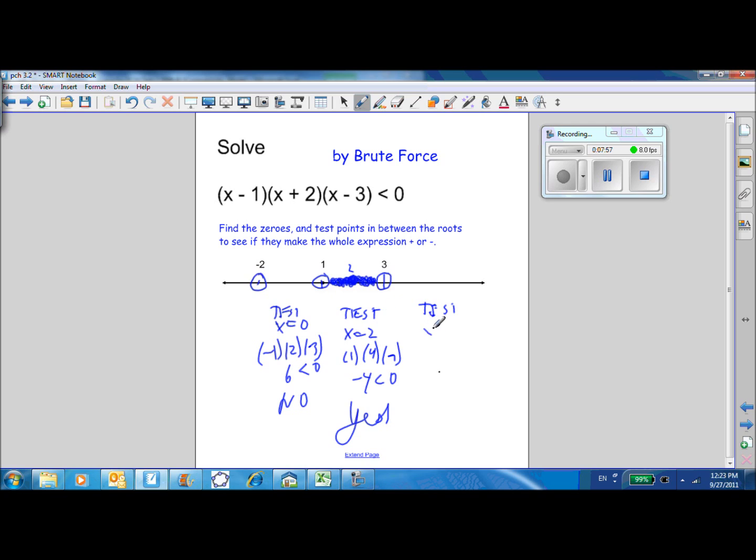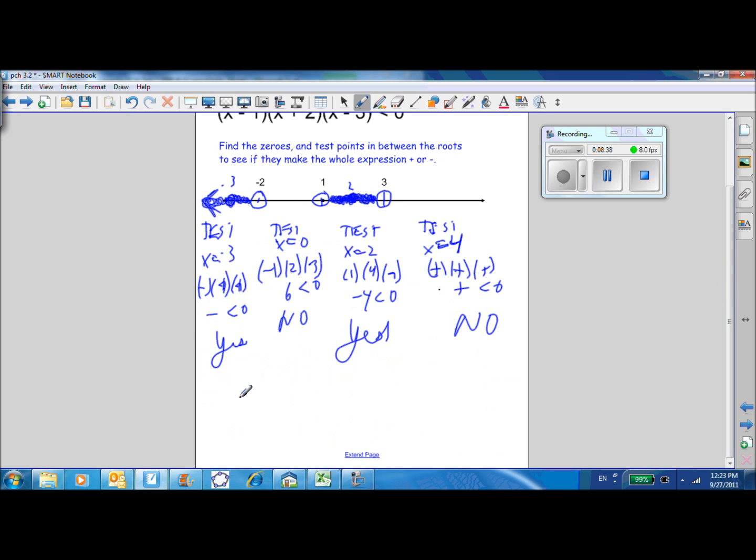Now you can test x equals 4. And sometimes during this test, you can just sit there. Instead of actually giving the numbers, you can just say the sign. 4 minus 1 is 3. So it's positive times positive times positive. That's all positive. Is that less than zero? No. And over here we can test x equals negative 3. That'll make a negative times a negative times a negative. That's three negatives multiplied together. That makes negative. Is that less than zero? Yes. So negative 3 works along with all its friends on this section of the division. So again, we end up with x is less than negative 2 or 1 is less than x is less than 3.